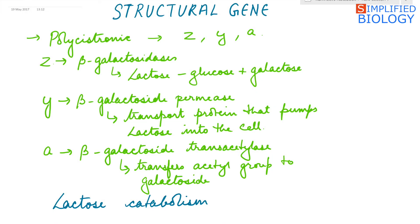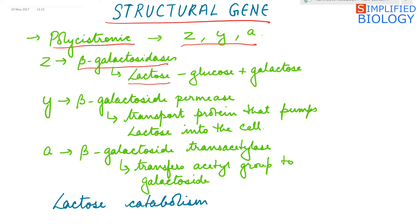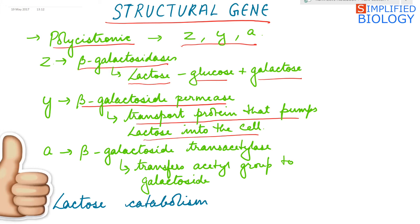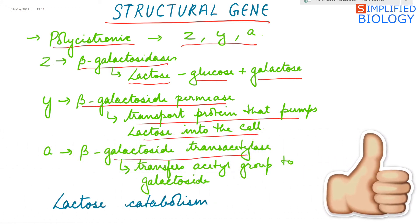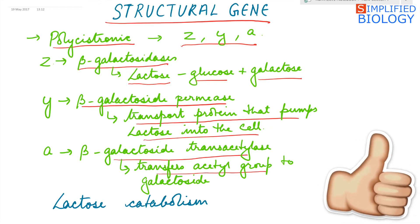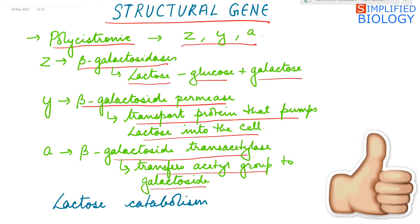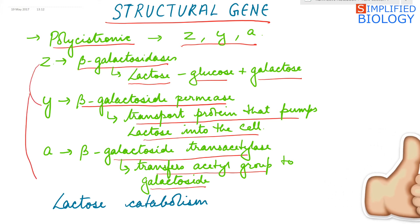The structural gene in the lac operon is polycistronic — it has three sets of genes: Z, Y, and A. Z codes for beta-galactosidase, which breaks down lactose into glucose and galactose. Y codes for beta-galactoside permease, which is a transport protein that pumps lactose into the cell. A codes for beta-galactoside transacetylase, which transfers an acetyl group to galactosidase. Z and Y are the two genes required for lactose catabolism.